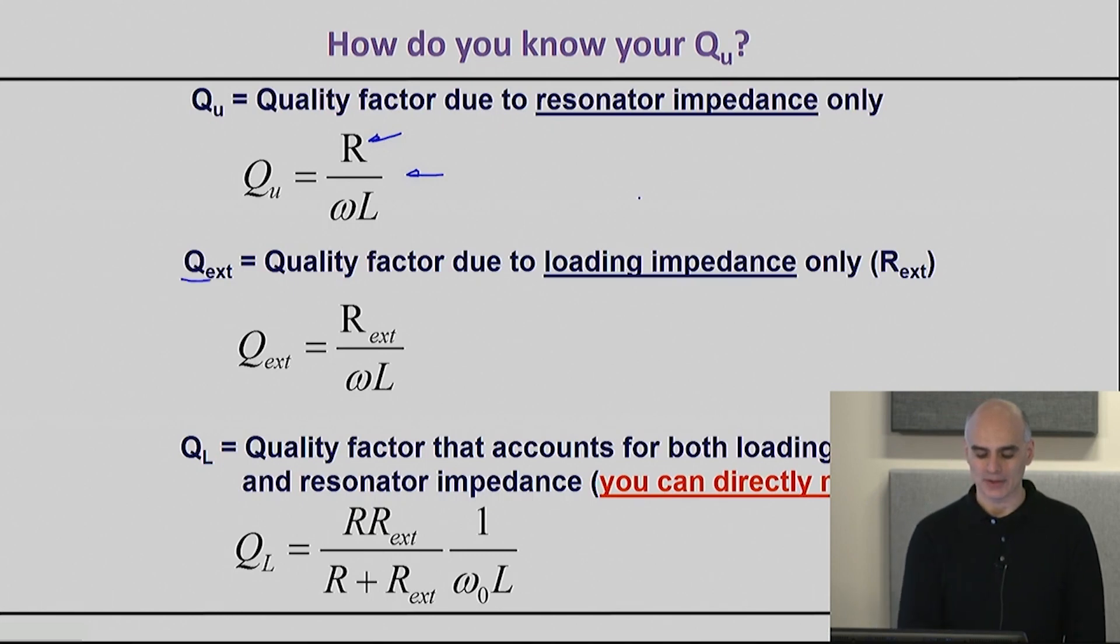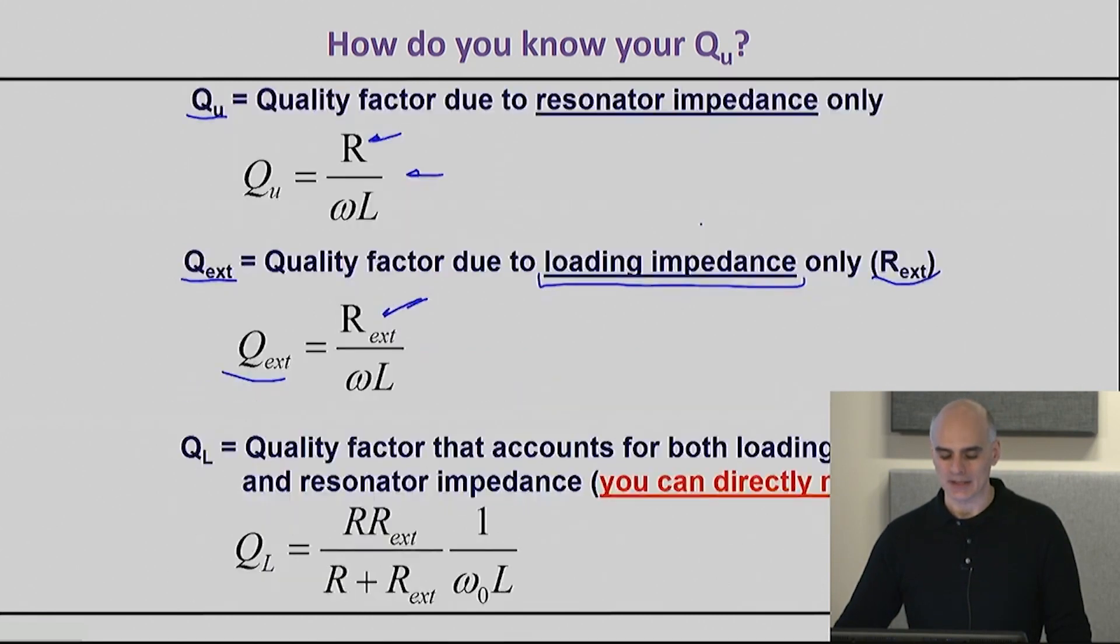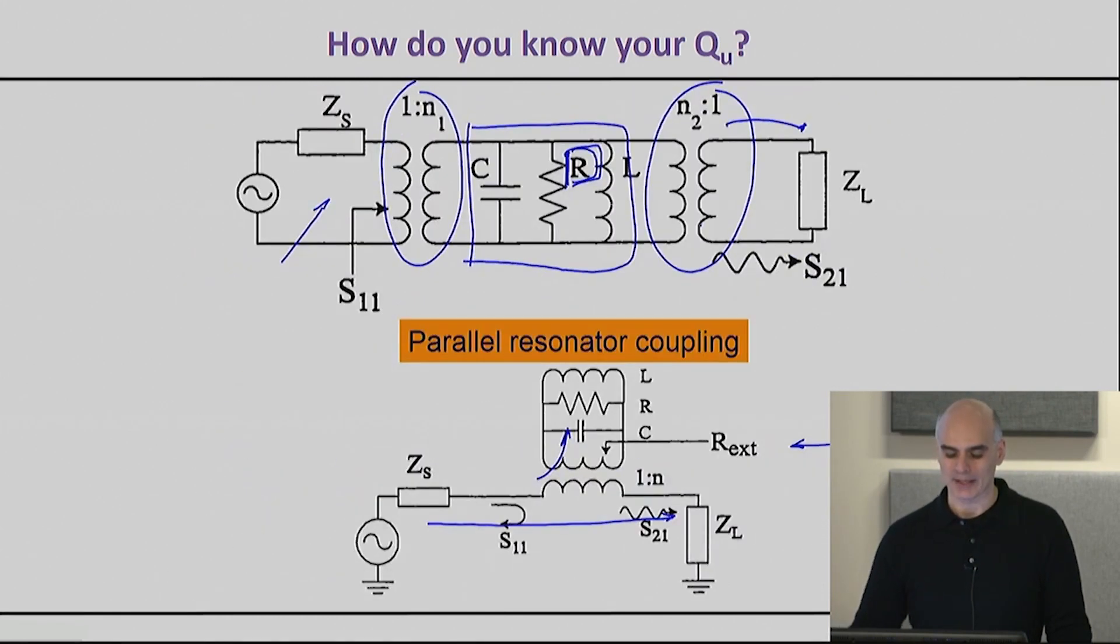The second quality factor is this external quality factor, which essentially means it's the quality factor that measures energy storage versus energy dissipation, but the energy dissipation is caused by the loading impedance only. Because it's external to the resonator we call it external resistance, and so the external quality factor is only due to the existence of the external resistance—for example, the resistance you will have right here by loading the resonator from the input and from the output.